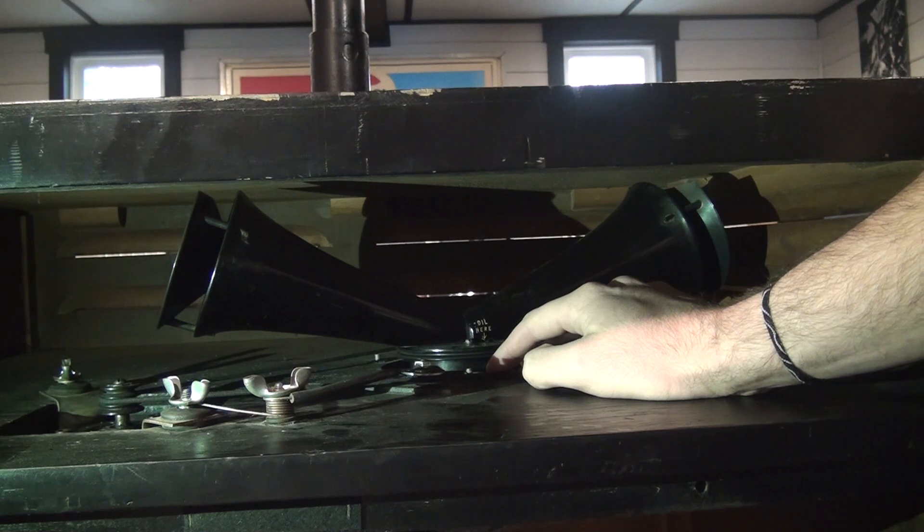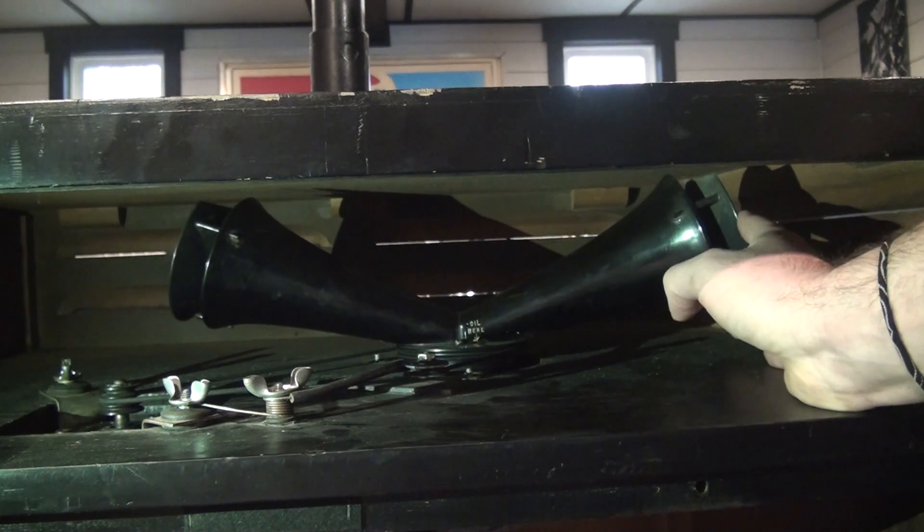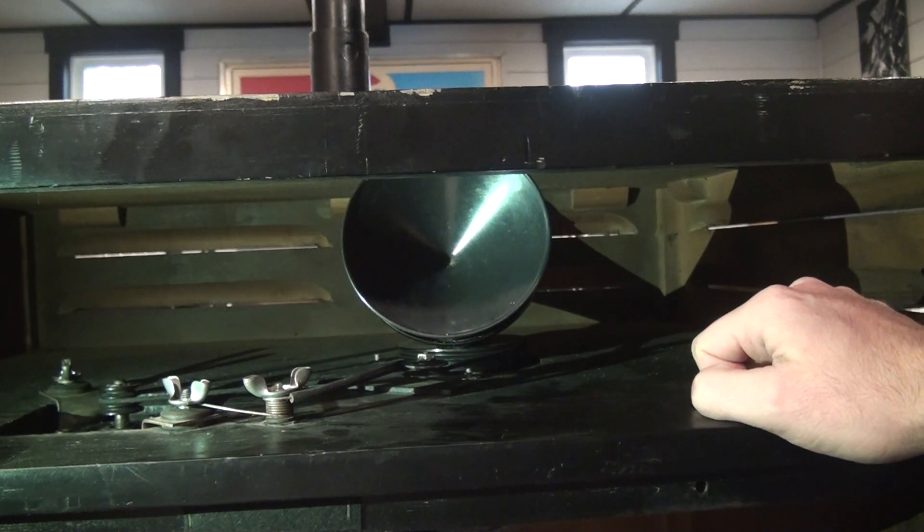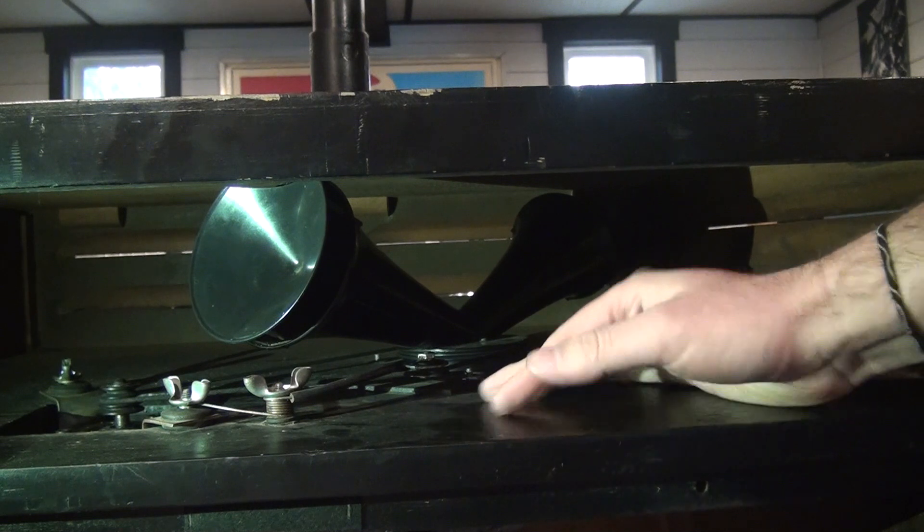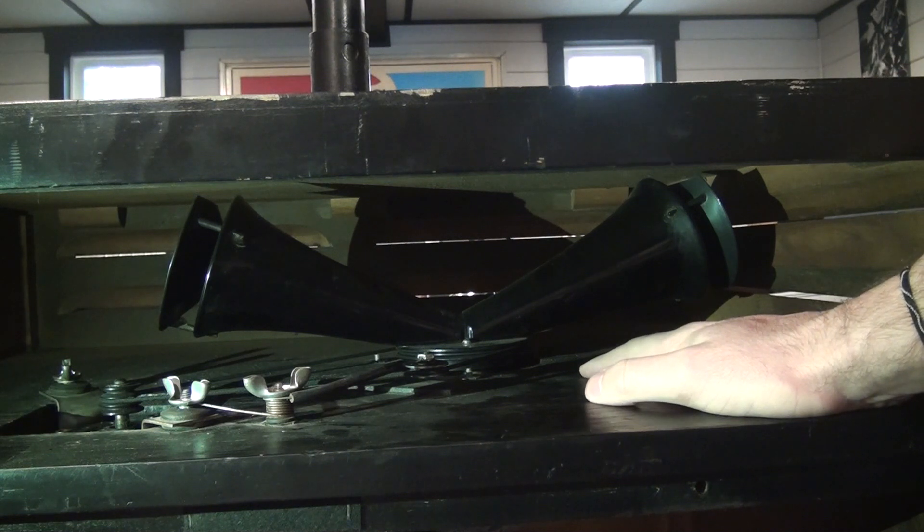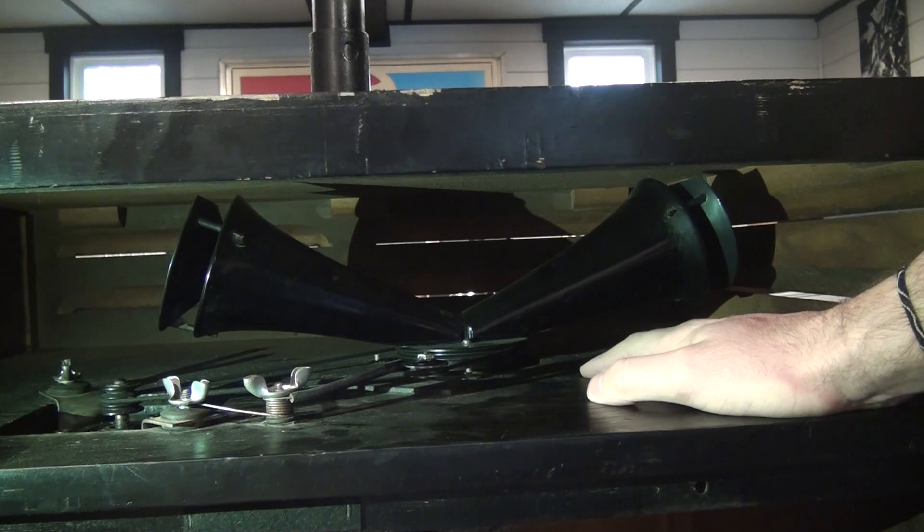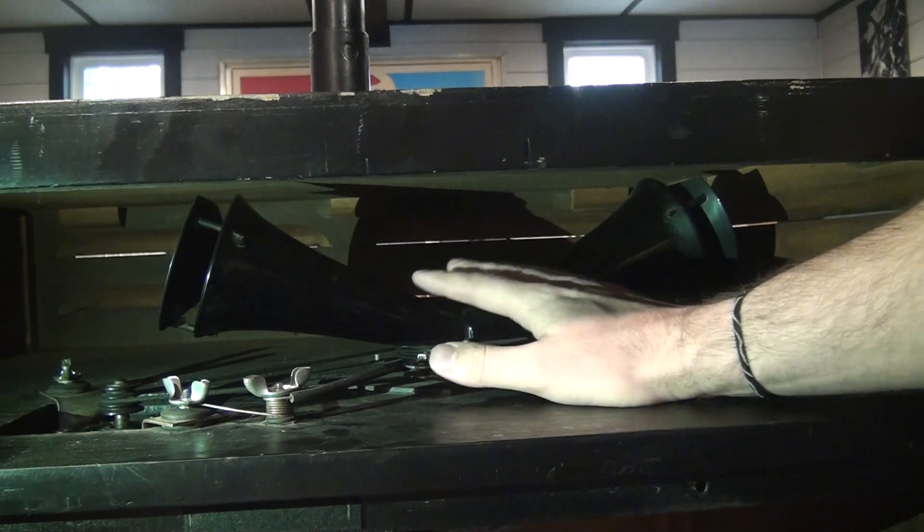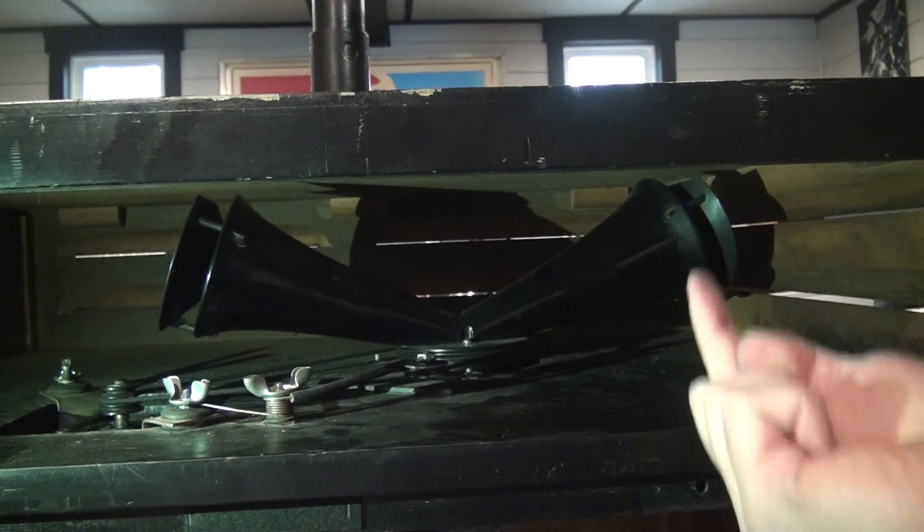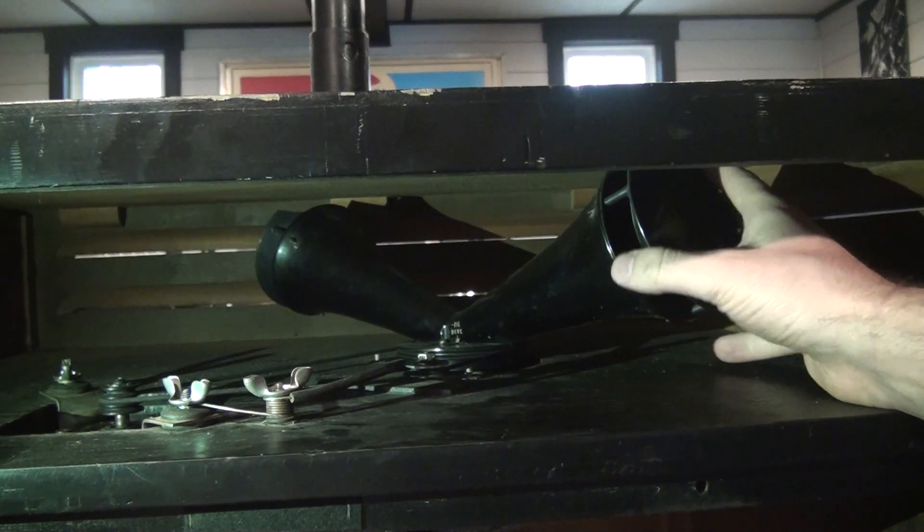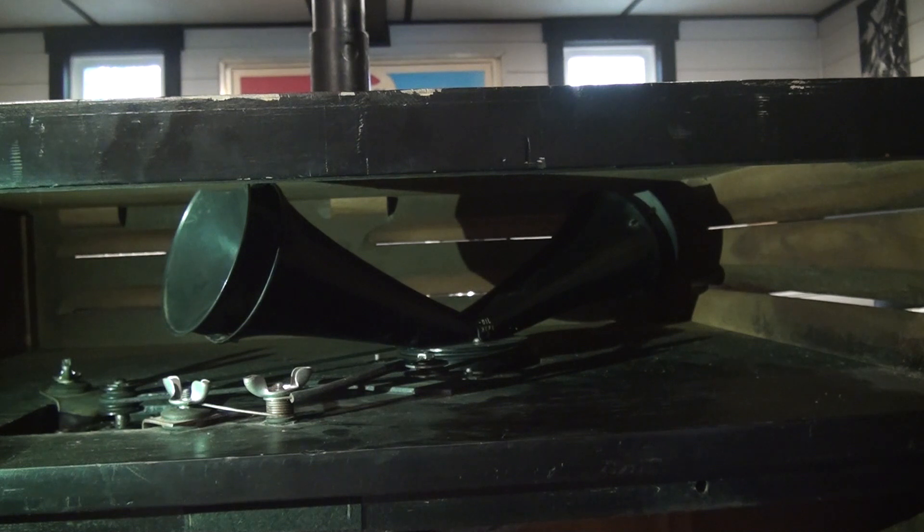So this particular Leslie has two rotating sections, a top and a bottom. And how they work is the bottom has a woofer or a speaker that points down into a drum, and we'll look at that in just a second. And the drum spins. And the top section has a tweeter or a speaker that fires upward. It's pointed up. And the sound is forced into this horn here. And as the horn spins, it gives us the effect.